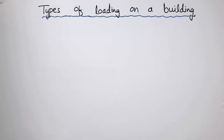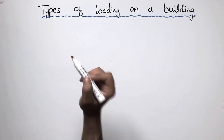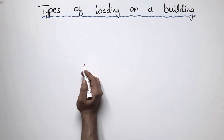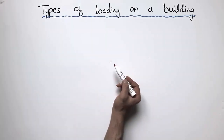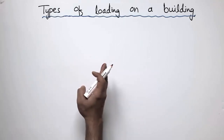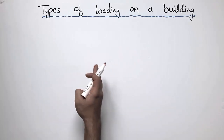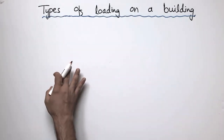Hello guys, welcome back to the 7 Engineering YouTube channel. Please subscribe to our channel for daily 7 Engineering content. Today our lecture is about the types of loading on a building. In this lecture we are going to focus on some of the important types of loading acting on any structure. We know that there is no single load acting on any building, but there is always a combination of loads acting on any building.